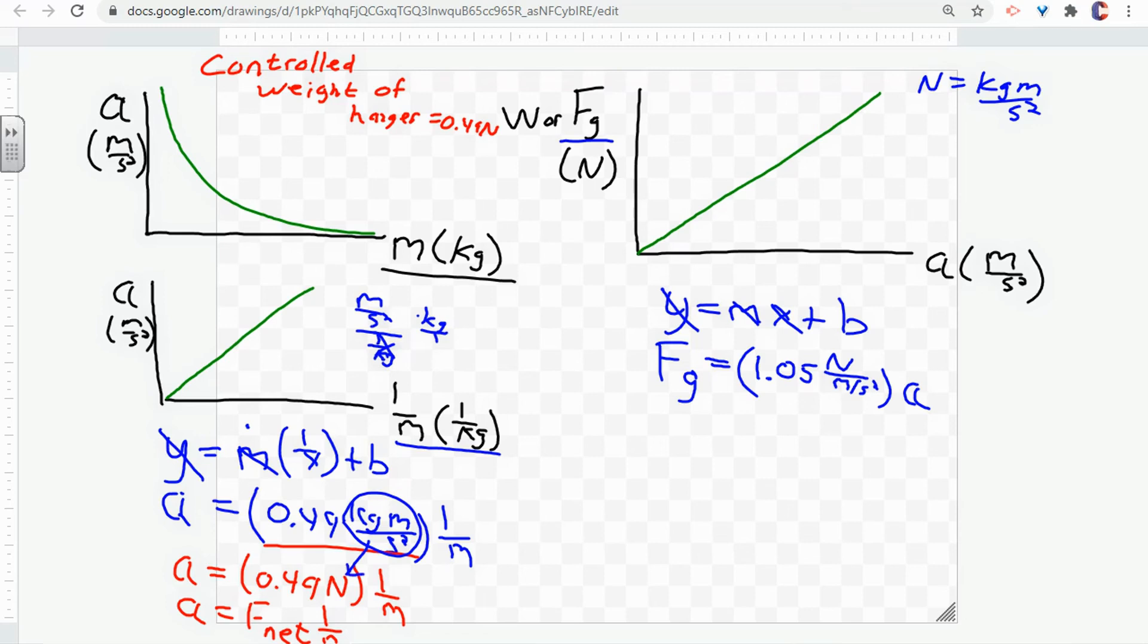So if we substitute that in right here, we get kilogram meter per second squared over meter per second squared. Well, the units are going to all cancel out and simplify to kilograms.